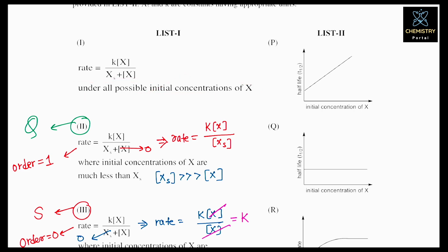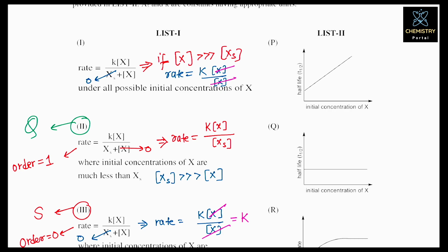Suppose the initial concentration of X is much greater than XS. Then we can neglect XS in the denominator. The rate becomes rate = K·X / X, and X cancels out, giving rate = K. This means it is a zero order reaction — order equals zero.